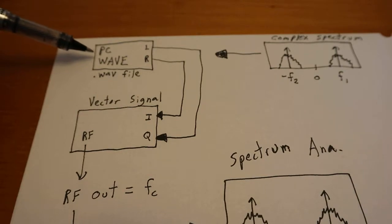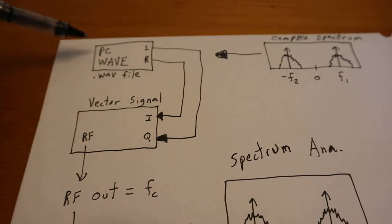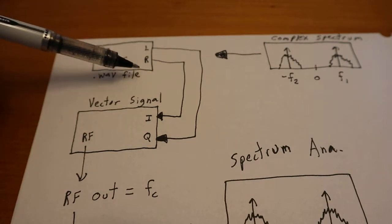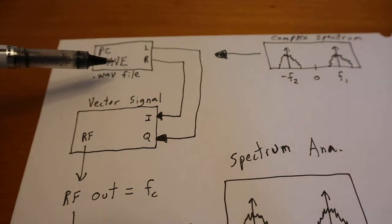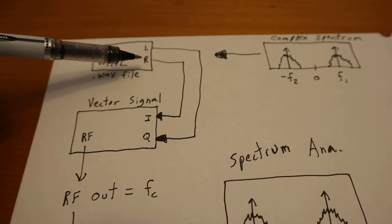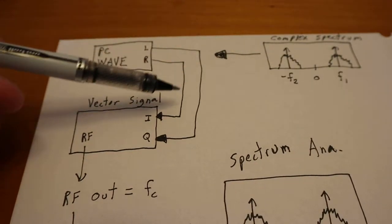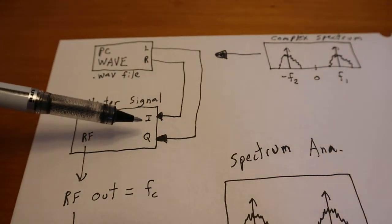So here we have a computer, we call that the PC, and it can play a WAV file. And out the sound card, it's going to have a left signal and a right signal. Well, using the equations I showed you, we can make this WAV file, have the PC play it out, and then put these left-right signals into what's called a vector signal generator, as the I and Q signals.